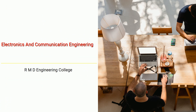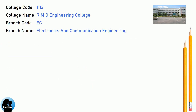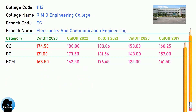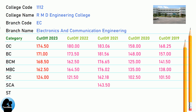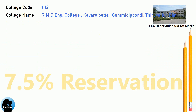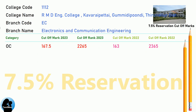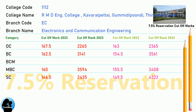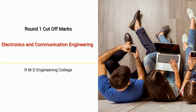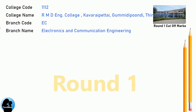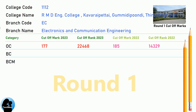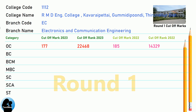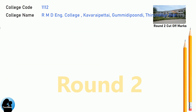DNEA Cut-Off for RMD Engineering College in Electronics and Communication Engineering. DNEA 7.5 Reservation Cut-Off for RMD Engineering College in Electronics and Communication Engineering. DNEA Round 1 Cut-Off for RMD Engineering College in Electronics and Communication Engineering. DNEA Round 2 Cut-Off for RMD Engineering College in Electronics and Communication Engineering.